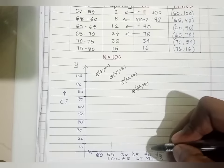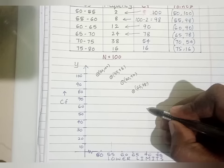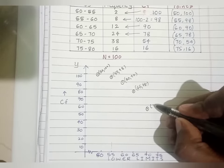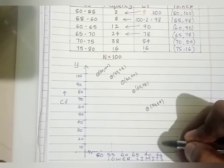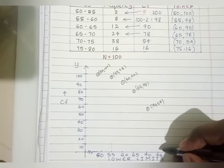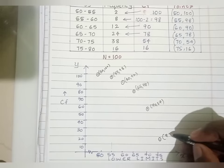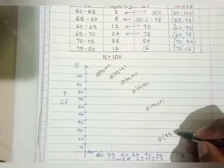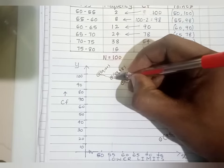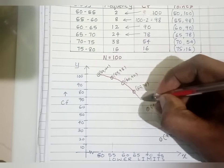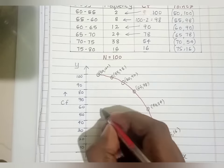For X=70, Y is 54 — it is between 50 and 60. For X=75, Y is 16. Now join these points with your freehand. This is the more than type OJAL.